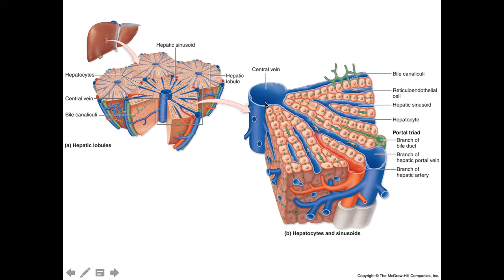In the center of each lobule is the central vein. Blood is brought to the liver via the arteries or the portal system, and then moves through very narrow passageways called sinusoidal capillaries. As blood moves through these sinusoidal capillaries, it passes next to hepatocytes — the cube-like liver cells involved in biosynthesis, vitamin and nutrient storage, plasma protein production, and detoxification. The blood is acted upon by these hepatocytes as it passes through the sinusoids.